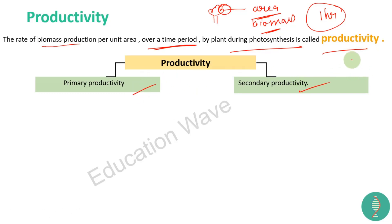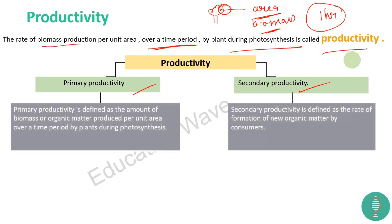Ab productivity ko hum dono mein divide karte hain. What is primary productivity? It is defined as the amount of biomass ya phir jo bhi organic matter, jo per unit area over a time period mein produce kiya tha during photosynthesis - that is our primary productivity. Yeh jo autotrophs the, matlab jo apna khana khud bana rahe the by using sunlight - that is our primary productivity.